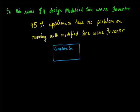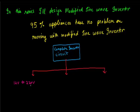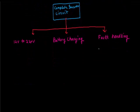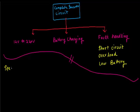Before starting the design I'll briefly describe the different peripherals as well as the housekeeping tasks that will be performed by the inverter circuit. The first one is 12 volt to 220 volt converter circuit. Second one is the battery charging stage and the third one is fault handling stage. In the fault handling, different things that is short circuit protection, overload protection and low battery protection will be taken care of.